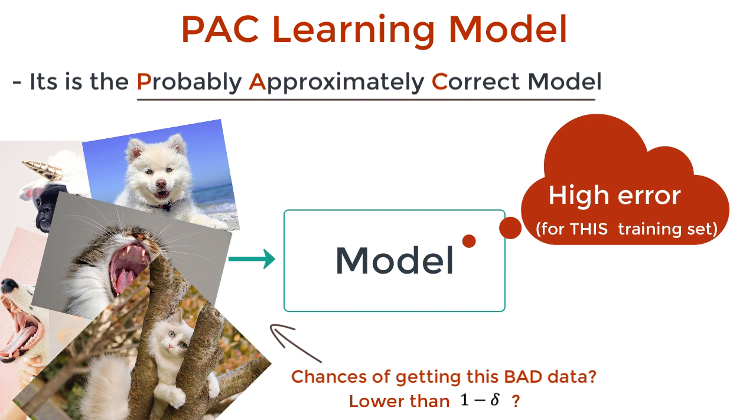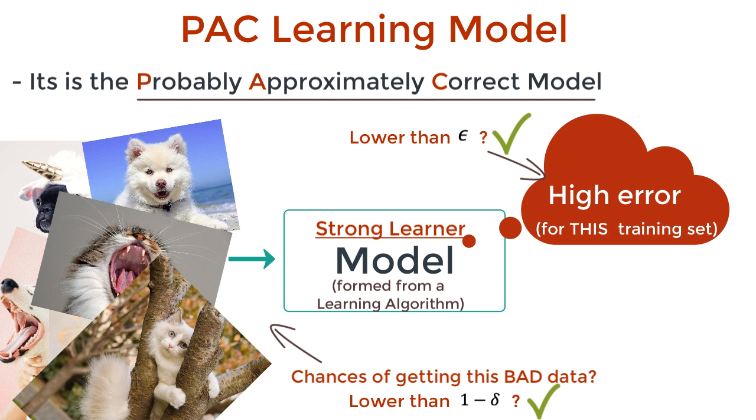Putting this all together, a problem is PAC learnable if a learning algorithm can find a solution that has an error less than some threshold with a probability that is greater than some other threshold. This is what I meant by quantitatively defining what is learnable. We have actual physical numbers here. Now, this defines PAC learnability. But if we look at this same definition in terms of the learning algorithm, we can say that a learning algorithm that satisfies these threshold conditions is set to be a strong learner. Okay, that's cool. But we're talking about boosting here. So where does that fit in? Keep listening.